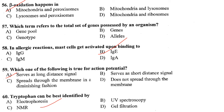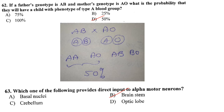Tryptophan can be best identified by NMR. Answer is option C. If the father's genotype is AB and the mother's is AO, the gametes are A, B from the father and A, O from the mother. The possible offspring genotypes are AA, AO, AB, and BO. There is a 50% chance the child will have blood group A phenotype. Answer is option D.